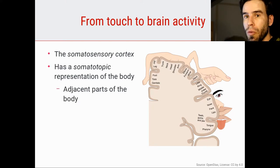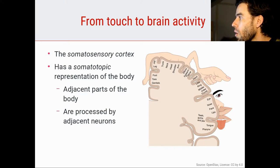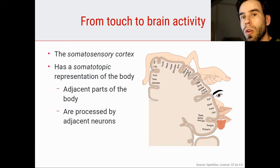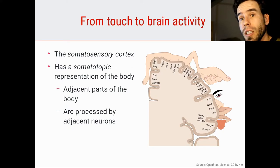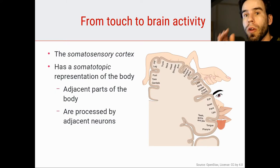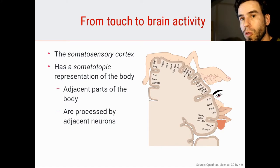Adjacent parts of the body are processed by adjacent neurons in your somatosensory cortex, and that's what you see in this picture on the right. For example, your forearm is processed by a region of your cortex here, and right next to it there would be a region that processes touch of your wrist. You also see that parts of your body that you are very sensitive in — things like your nose, your face in general, and your hands — are represented by larger parts of your somatosensory cortex than parts of your body that you're not so sensitive to. So your sensitivity, in a way, is also represented in the somatosensory cortex.